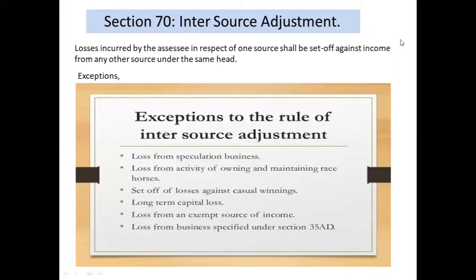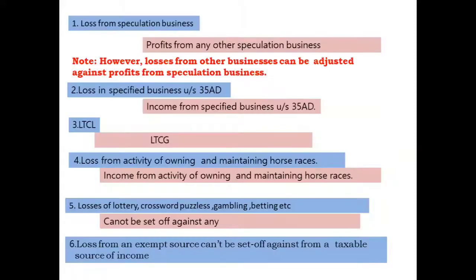In the same head there are sources of income to be set off against income from any other source. That is the exception to the rule of inter-source adjustment. In the same head, there are six points — six points will be important. Then we have to do inter-head. There are exceptions. The first exception: loss from speculation business.